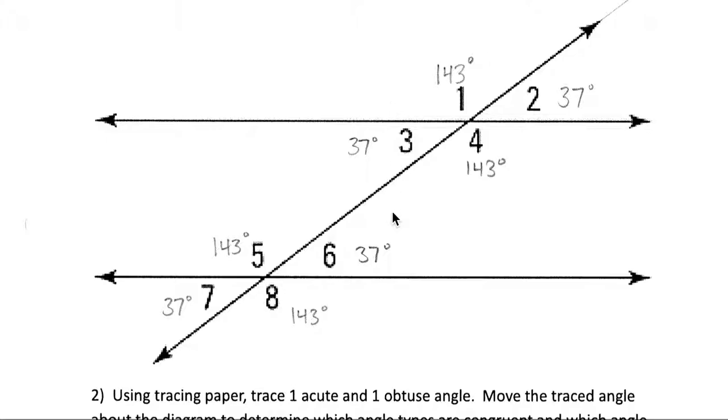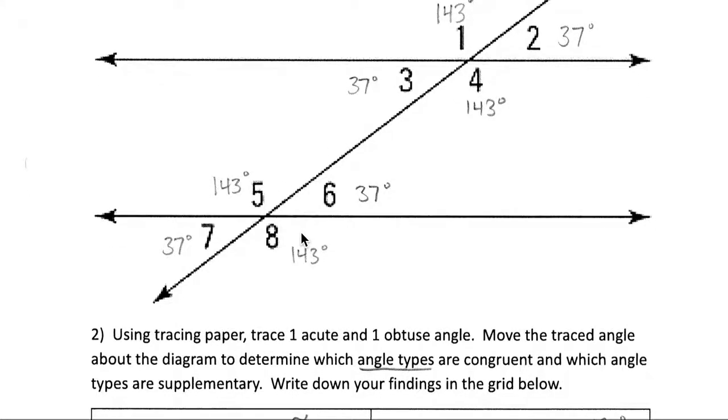And then we also have some alternate interior angles. 3 and 6 they seem to be congruent. 4 and 5 are also alternate interior, they seem to be congruent. Alright, so I think that's all of our relationships there.